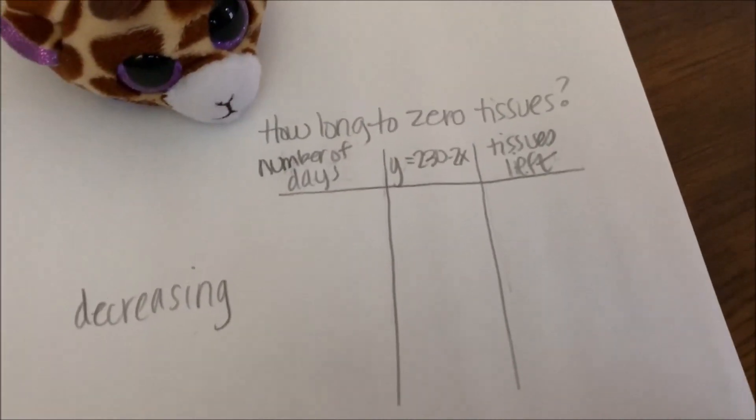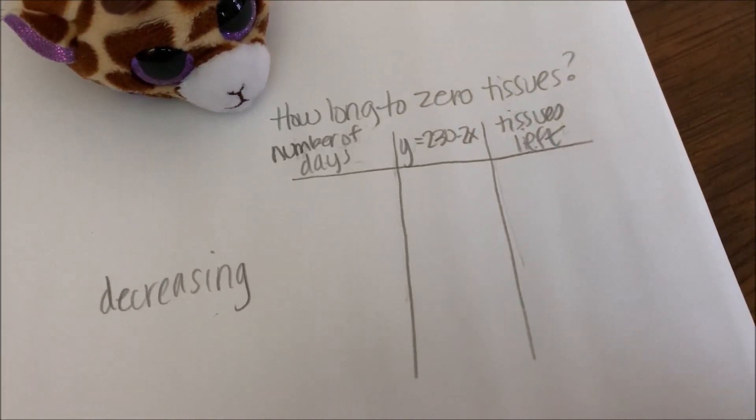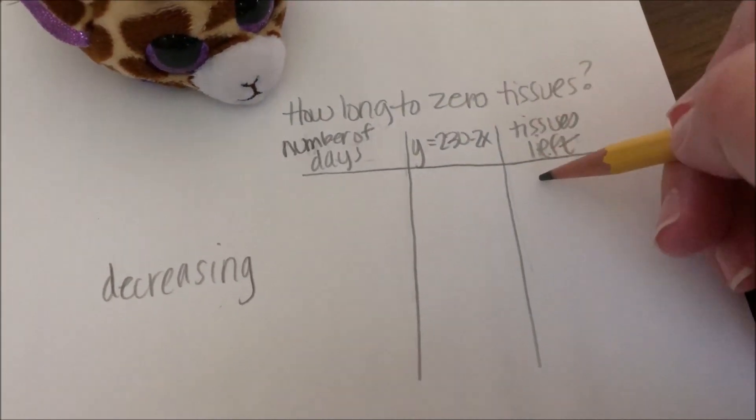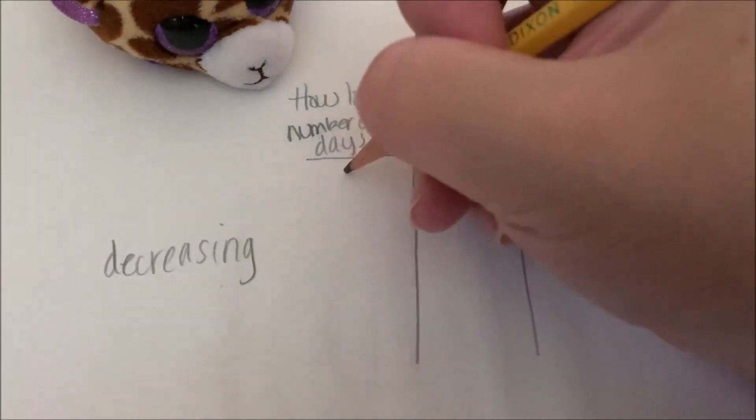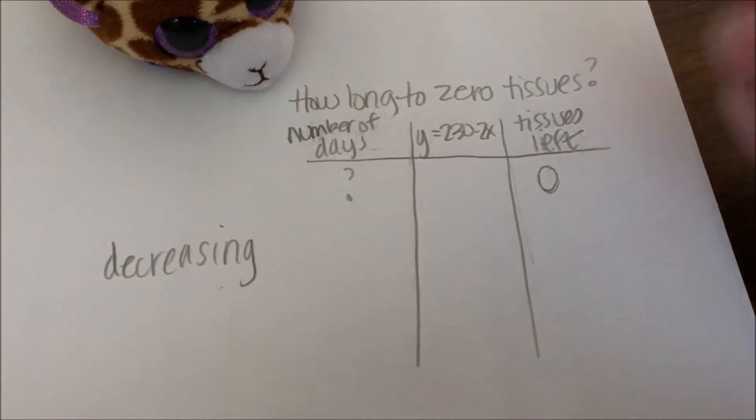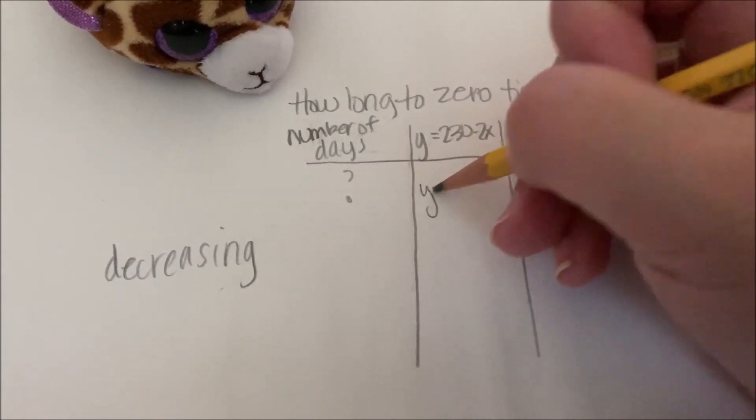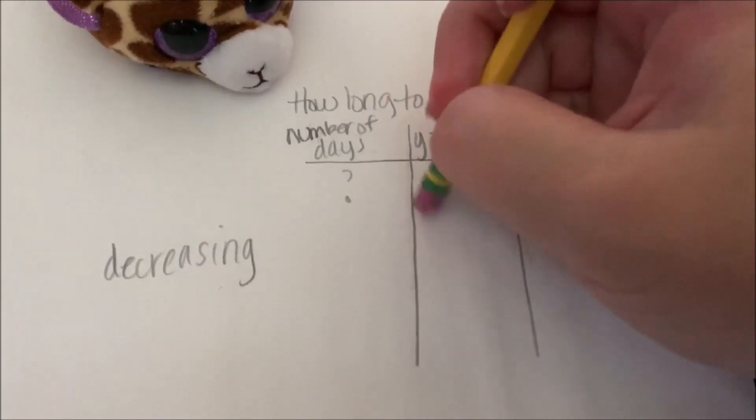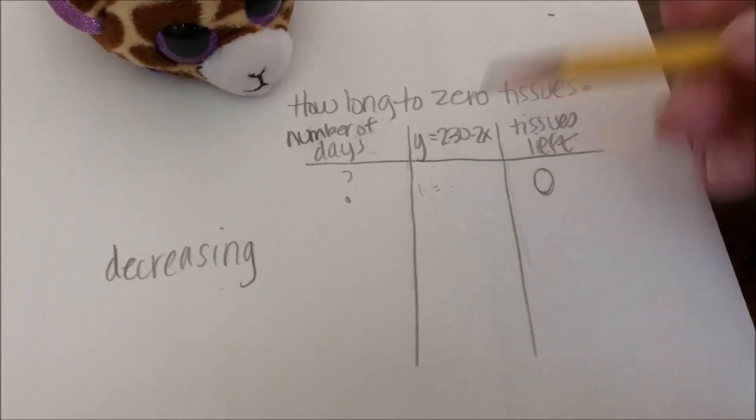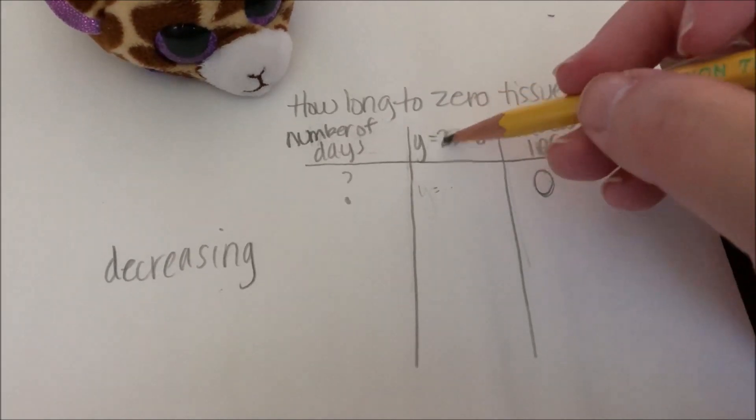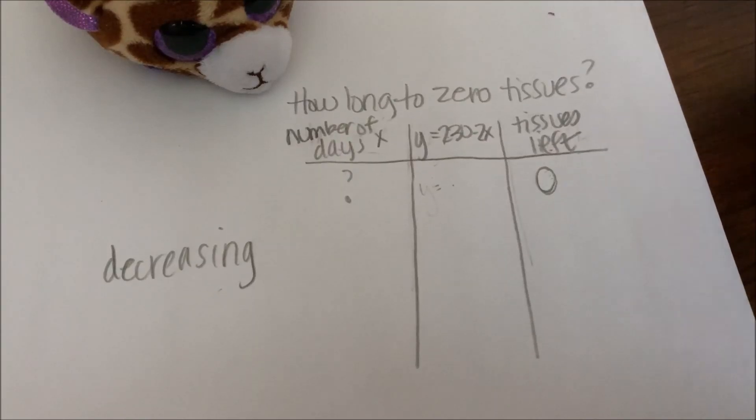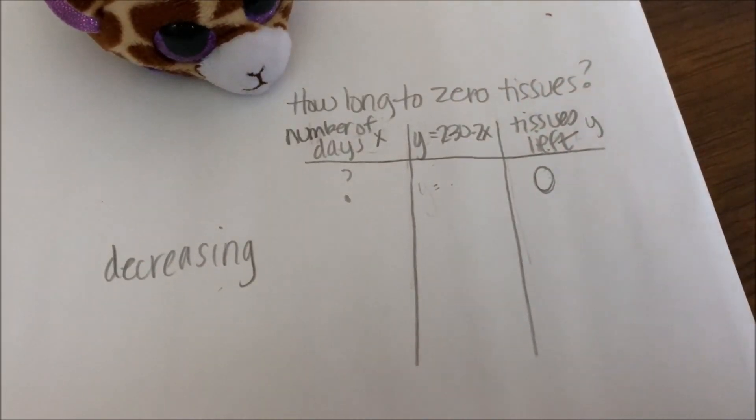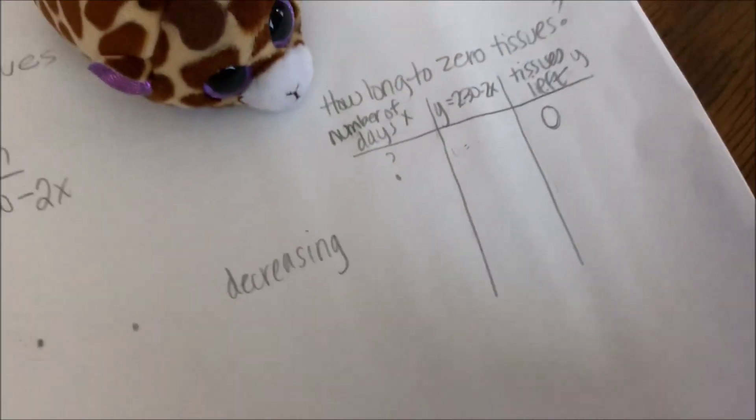So here is my table. I'm going to think about this. Zero tissues left. I don't know how many days it would take. The equation is this. Where does the zero go in this equation? The number of days is x. The tissues left is y. So let's rewrite this.